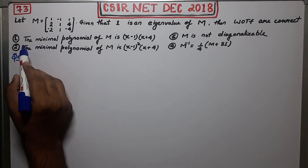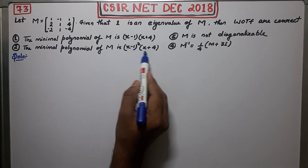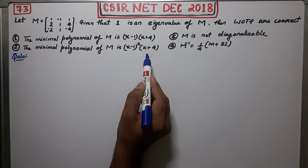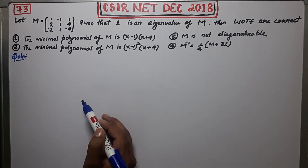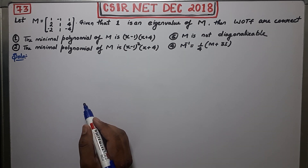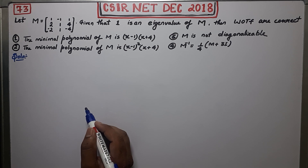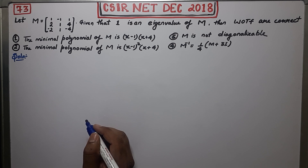The first option says the minimal polynomial is a certain expression; the second option says the minimal polynomial is another expression; the third option says M is not diagonalizable; and the fourth option says that (1/4)M inverse equals (1/4) times M plus 3 times the identity. We have to check these options.